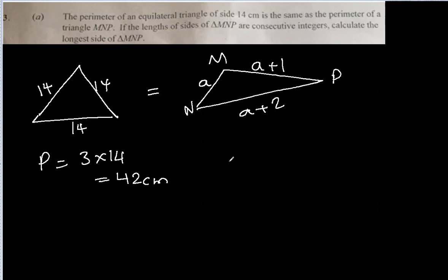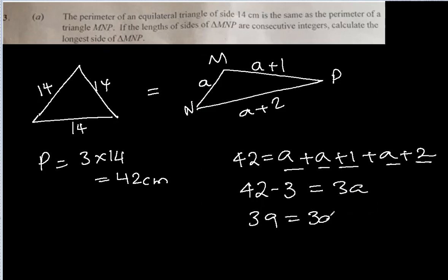So we can do that: 42 is equal to a plus a plus 1 plus a plus 2. 1 plus 2 is 3, and let's move it to the other side. 42 minus 3 equal to a plus a plus a. 3a. 39 is equal to 3a. So a is 39 divided by 3, 13 cm is a.